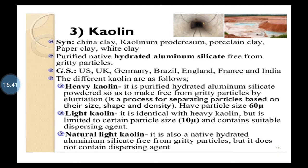Next drug is kaolin — kaolin is the drug from mineral source. Other names for kaolin are china clay, kaolinum, porcelain clay, paper clay, white clay. It is a purified native hydrated aluminum silicate which is free from gritty particles — that one sentence you have to write down: it is a purified native hydrated aluminum silicate free from gritty particles.